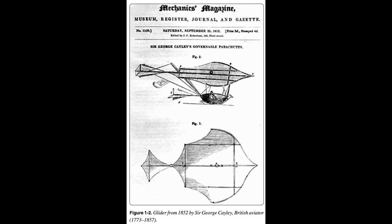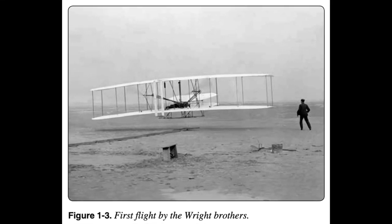Men such as William Samuel Henson, who designed a huge monoplane that was propelled by a steam engine housed inside the fuselage, and Otto Lilienthal, who proved human flight in aircraft heavier than air was practical, worked toward the dream of powered flight. A dream turned into reality by Wilbur and Orville Wright at Kitty Hawk, North Carolina, on December 17, 1903. The bicycle-building Wright brothers of Dayton, Ohio, had experimented for four years with kites, their own homemade wind tunnel, and different engines to power their biplane.